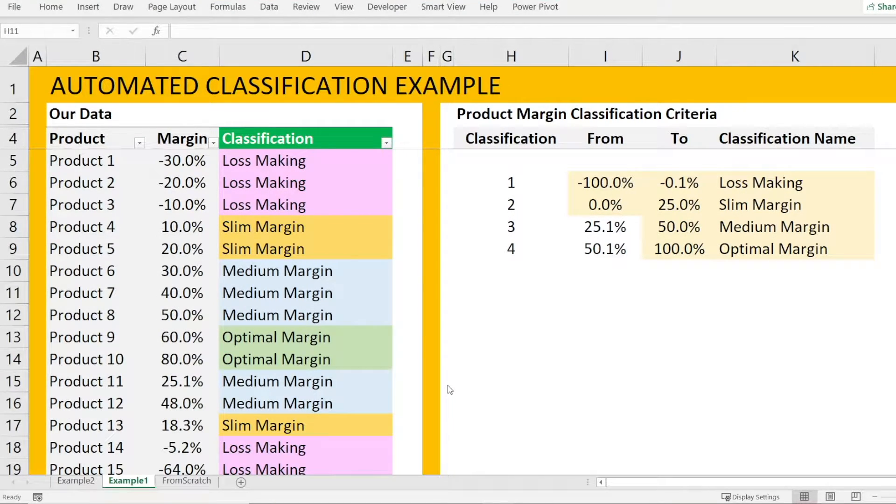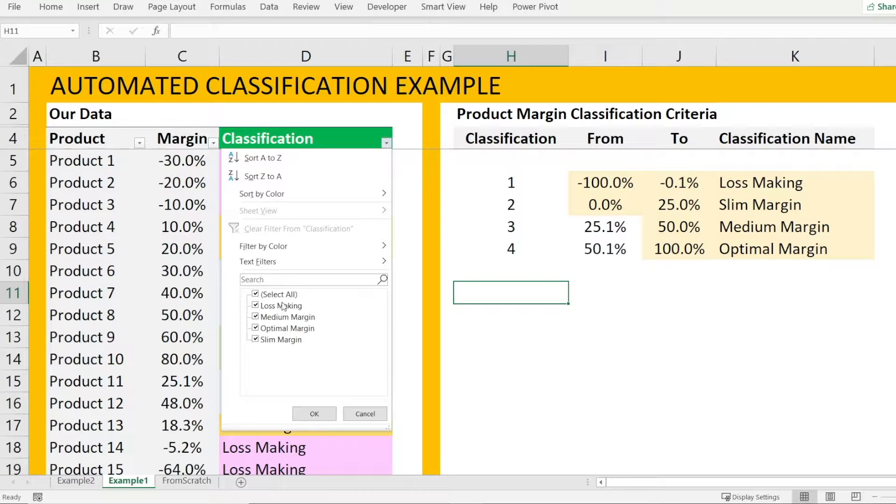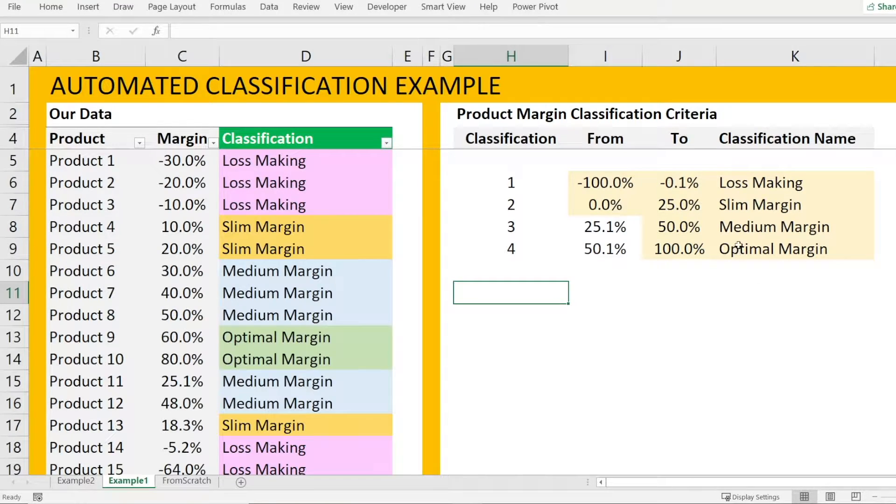So in here, we have a dashboard with products margin classifications, which is our data, and product margin classification criteria, which outline the four buckets of the classifications that we have set up. So we have four in here: loss making, medium, optimal, and slim margin, which is outlined in here. So for margin between 0 and 25%, for example, we are calling it slim margin. 25 to 50, we're calling it medium margin, so on and so forth.